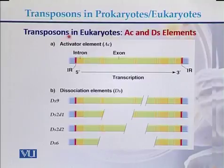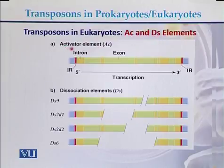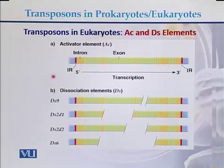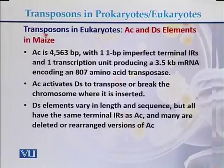In higher eukaryotes, there are activator (Ac) and dissociation (Ds) elements. This diagram shows the activator elements and the dissociation elements, which are found in higher eukaryotes — for example, in maize.